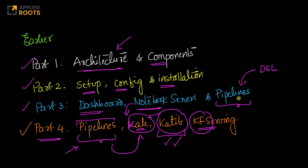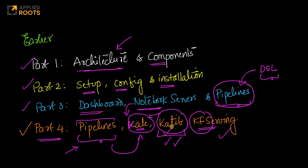In the last session, we discussed how pipelines are designed internally — how do you design a pipeline yourself, and why there is a DSL, a domain-specific language, that Kubeflow uses to define these pipelines. We will continue on the same thread, but also do more hands-on work this week, where we'll actually deploy a model, do hyperparameter tuning using Katib, and simplify the building of pipelines using Kale.